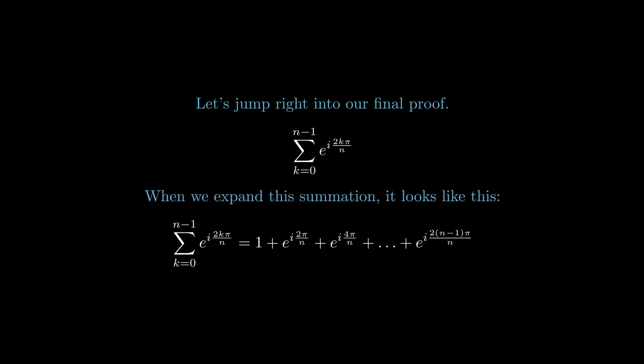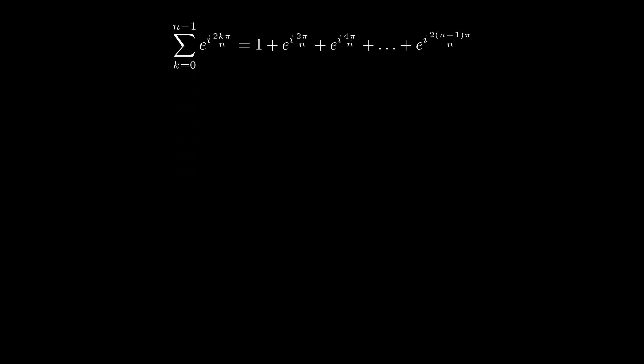Alright, let's jump right into our final proof. Let's take another look at this exponential expression of the vector sum. When we expand the summation, it looks like this: 1 plus e to the i(2π/n) plus e to the i(4π/n) and so on up to e to the i(2(n-1)π/n).